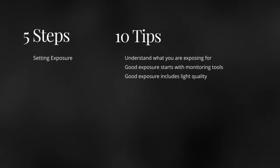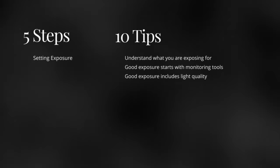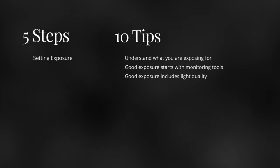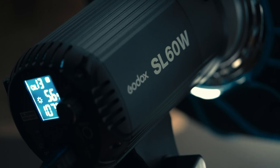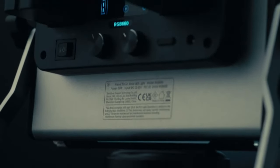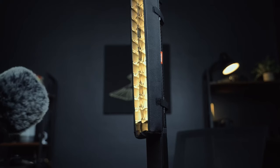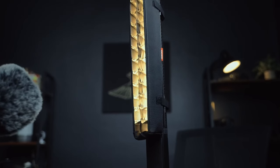Tip three: good exposure also includes the quality of the light. Natural light is the highest quality light you can afford because it's free. Artificial lights range from high quality to low quality and you get what you pay for, although there are some nice lights out there that you can get for super cheap like the Godox SL60W, the Neewer 660 panel light, and a ton of other lights — the quality is good, but it's not as great.